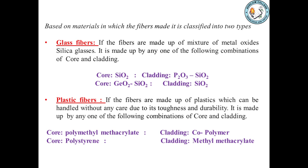Based on materials, fibers are classified into two types. Glass fibers: if the fibers are made up of a mixture of metal oxides and silica glasses. Combinations include core of SiO2 with cladding of P2O3-SiO2, or core of GeO2-SiO2 with cladding of SiO2. Plastic fibers: if the fibers are made up of plastics, which can be handled without any special care due to their toughness and durability. Combinations include core of polymethyl methacrylate with cladding of co-polymer, or core of polystyrene with cladding of methyl methacrylate.